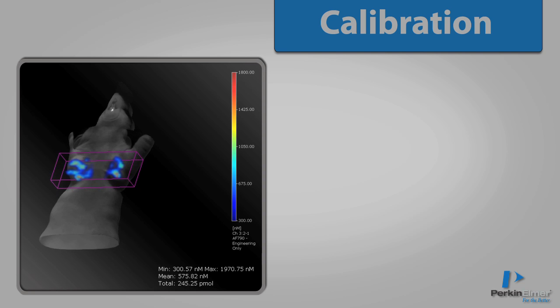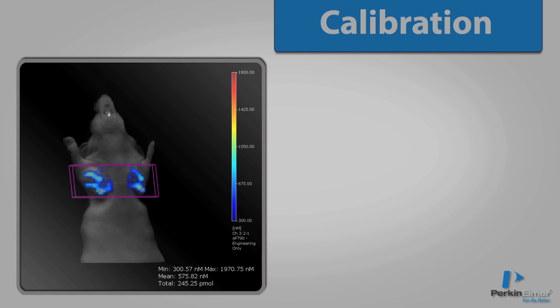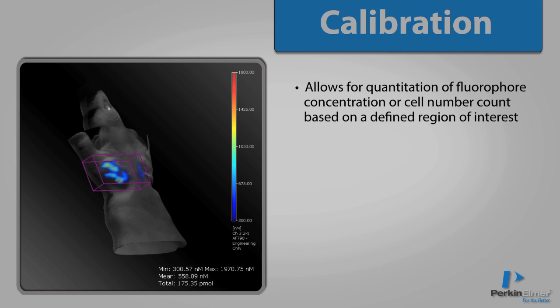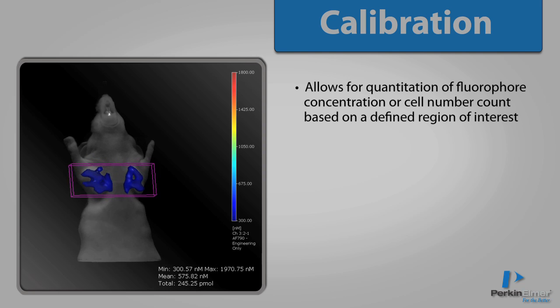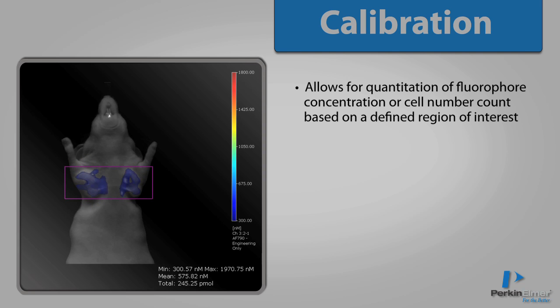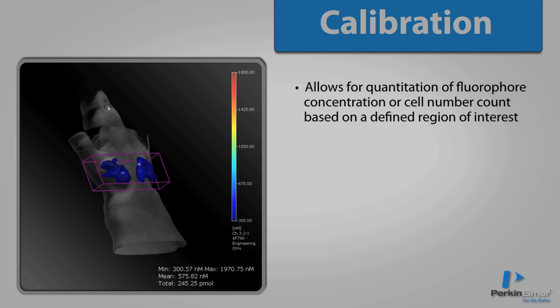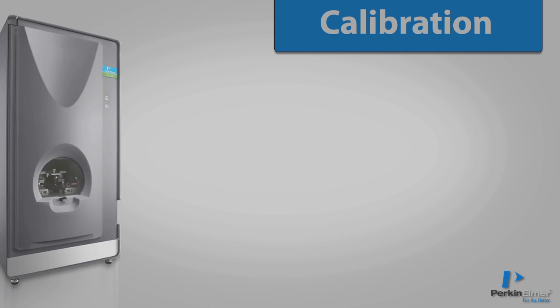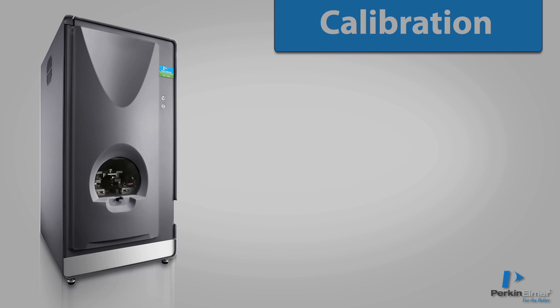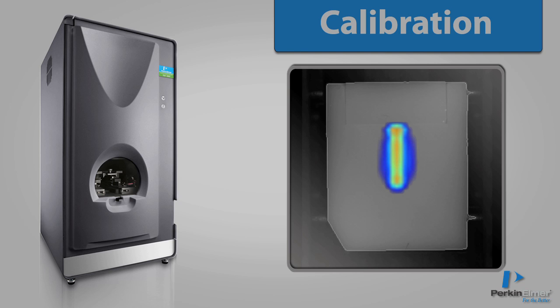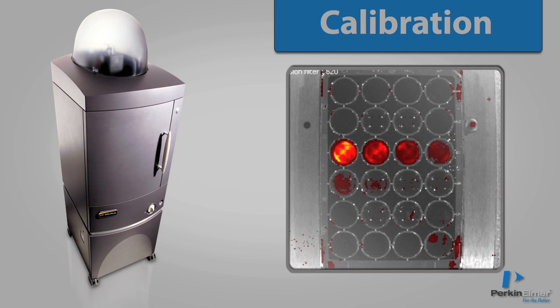In addition to data on the localization of a fluorescent source, 3D fluorescence tomography allows for the quantitation of fluorophore concentration or cell number count based on a defined region of interest. To do this, a calibration process must be employed to calculate a calibration factor relating the concentration of a fluorophore to its fluorescent signal intensity. In the FMT, this is done by measuring known concentrations of fluorophore using a rectangular phantom that approximates the light absorption and scattering process in tissue. In the IVIS system, a well-plate standard curve based on known cell number counts or concentrations of fluorophore is used.